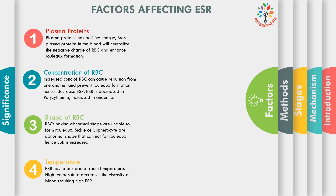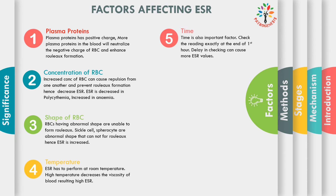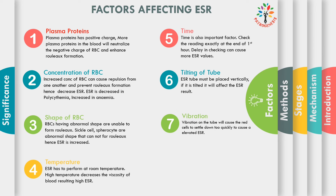Fourth, temperature: ESR has to be performed at room temperature. High temperature decreases the viscosity of the blood, resulting in high ESR values. Fifth, time: you have to check the reading exactly at the end of the first hour, as a delay will cause higher ESR values. Sixth, tilting of tube: the ESR tube must be placed vertically; if the tube is tilted, it can affect the ESR result. Seventh, vibration: vibration of the tube will cause the red cells to settle down too quickly, causing an elevated ESR level.